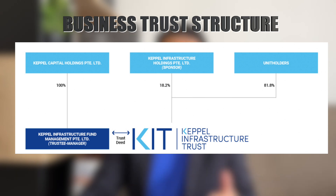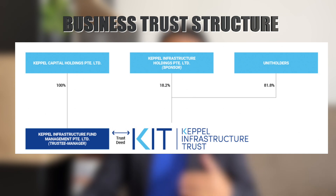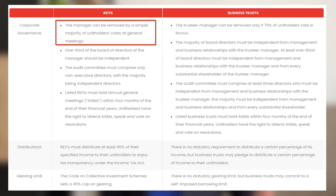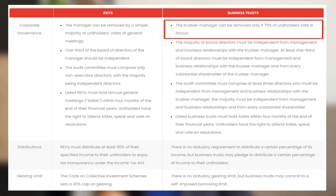These are the main differences. The next part is — if we are not happy with the manager, how do we remove them? For REITs, you just need a simple majority of unit holder votes at a general meeting to remove the REIT manager. But for a business trust, because the trustee and manager is the same entity wearing two hats, you need 75% of unit holders to vote in favor of removing them.